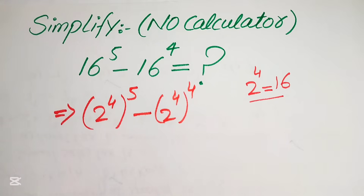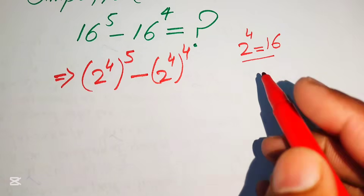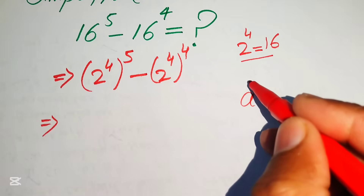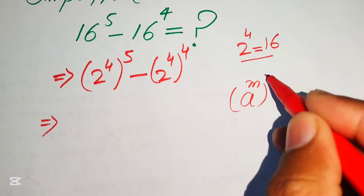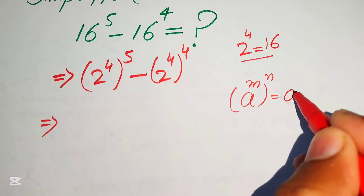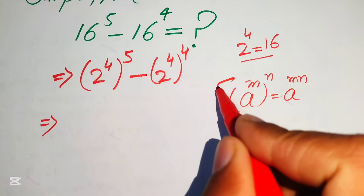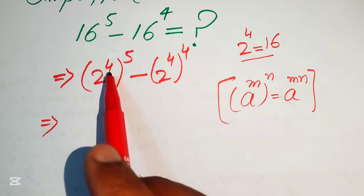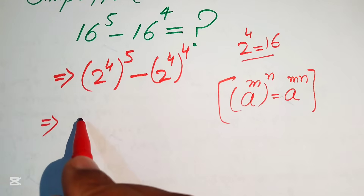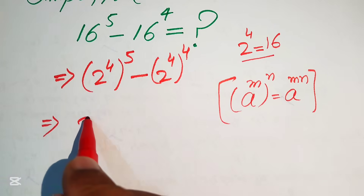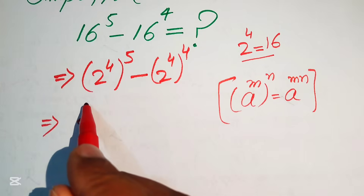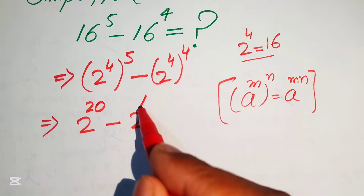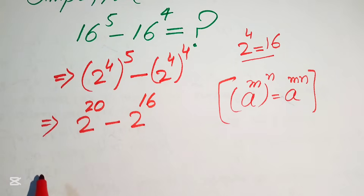After this step we need another exponential law: if we have a to the power of m to the power of n, it equals a to the power of m times n. We apply this law because the two exponents are multiplied. So we get 2 to the power of 4×5 = 2^20, minus 2 to the power of 4×4 = 2^16.